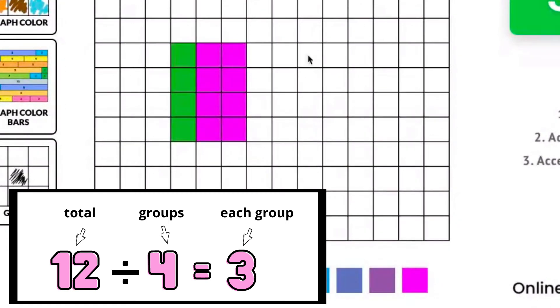So now we have 12 divided by 4 equals 3. Again, a total of 12, 4 groups, 3 in each group.